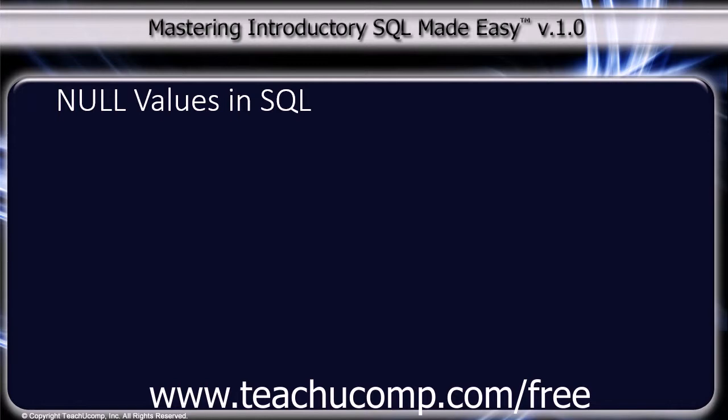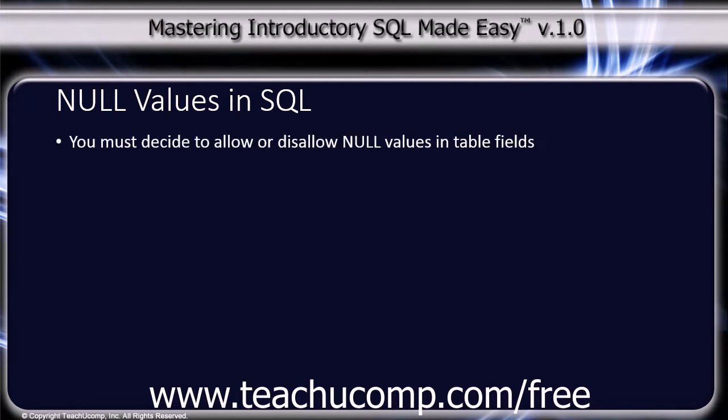When creating tables in SQL, you will need to deal with null values. A null value is a value that is unknown. These values can occur within database tables when a user who is performing data entry skips entering a value into a field. When a value is not entered, it is said to have a null value. Note that a null value is not equal to anything, as the value is unknown. It is not equal to zero or to a blank text string. It is also not greater than or less than any other value.